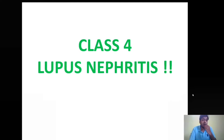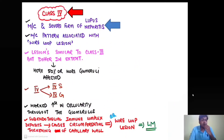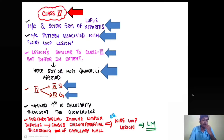Class 4 lupus nephritis is the most important — the most common and most severe form of lupus nephritis, and most commonly associated with the wire loop lesion. The lesions are similar to class 3 but differ in extent: here, 50% or more of the glomeruli are involved. There is a marked increase in cellularity throughout the glomerulus. Very importantly, there is sub-endothelial immune complex deposition causing circumferential thickening of the capillary wall.